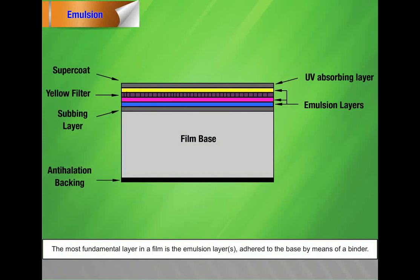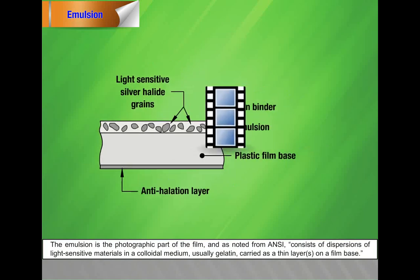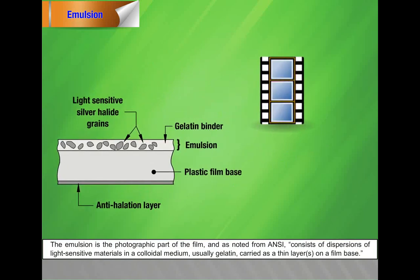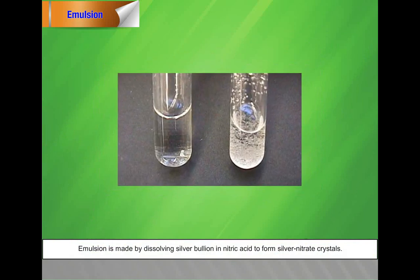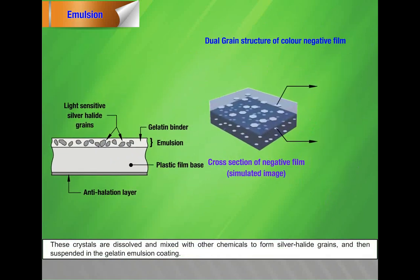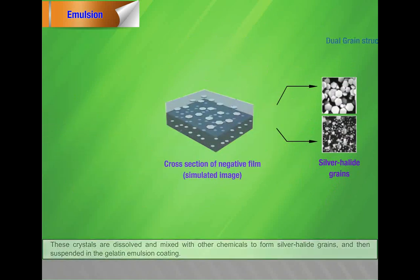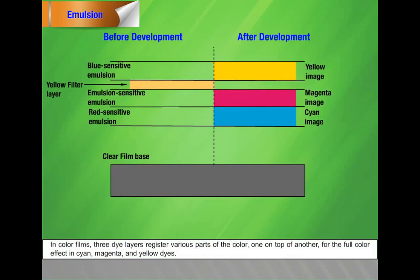The most fundamental layer in a film is the emulsion layer, adhered to the base by means of a binder. The emulsion is the photographic part of the film, consisting of a dispersion of light-sensitive materials in a colloidal medium — usually gelatin — carried as thin layers on a film base. The emulsion is made by dissolving silver bullion in nitric acid to form silver nitrate crystals, which are then dissolved and mixed with other chemicals to form silver halide grains suspended in the gelatin emulsion coating. In color films, three dye layers register various parts of the colors — one on top of another — for the full color effect in cyan, magenta, and yellow dyes.